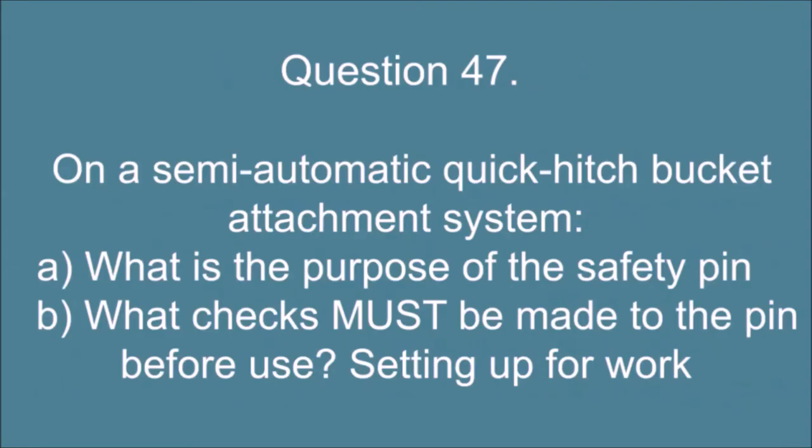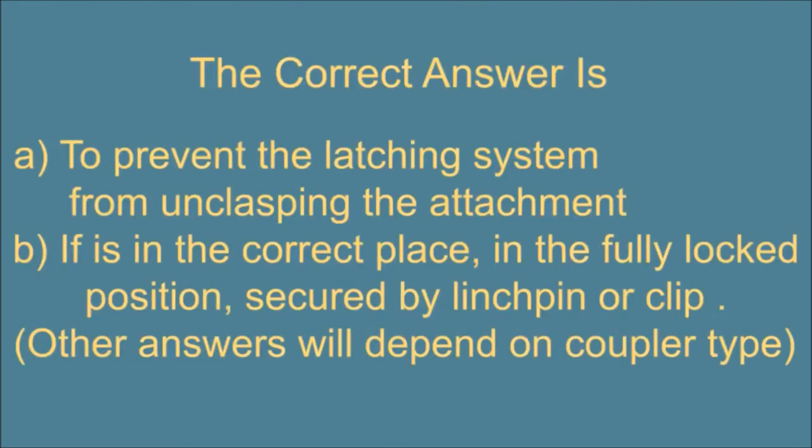Question 47. On a semi-automatic quick hitch bucket attaching system, A. What is the purpose of the safety pin? And B. What checks must be made to the pin before use? The correct answer is: A. To prevent the latching system from unclasping the attachment. And B. If is in the correct place, in the fully locked position, secured by linchpin or clip. Other answers will depend on coupler type.